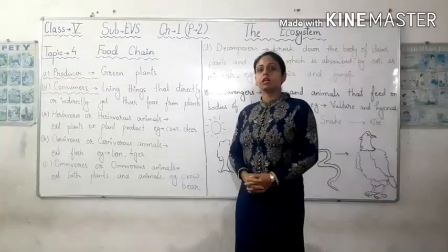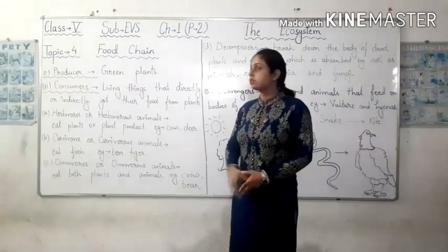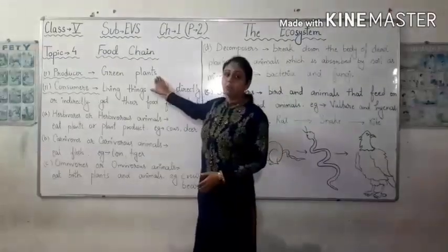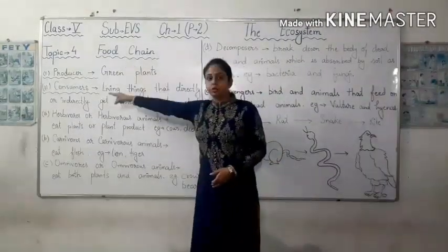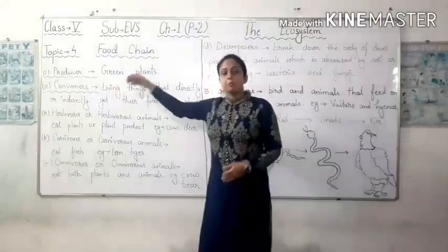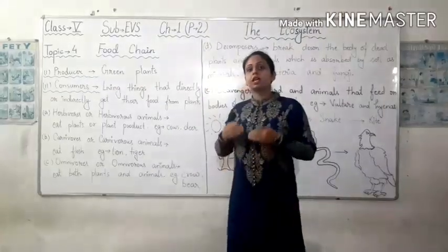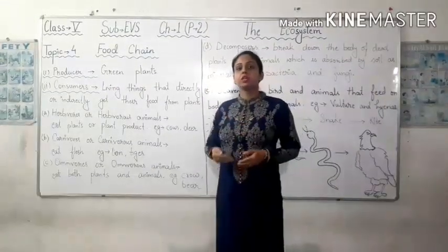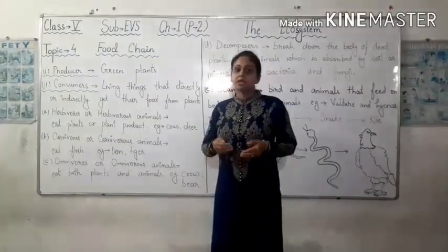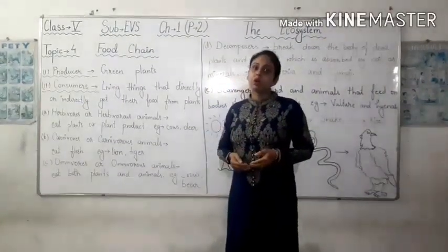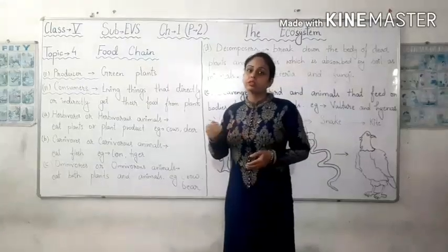As we have already discussed, green plants are known as producers, because they can produce their own food by the process called photosynthesis.